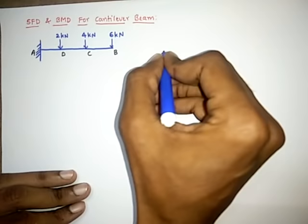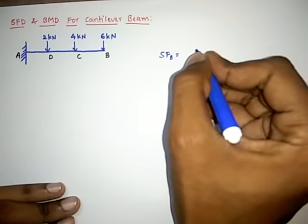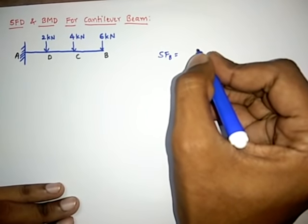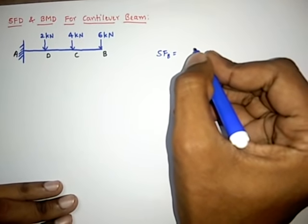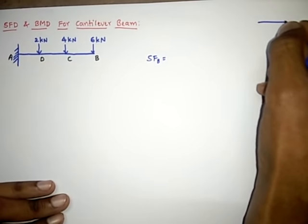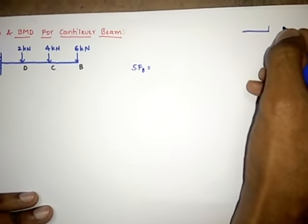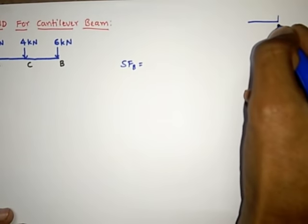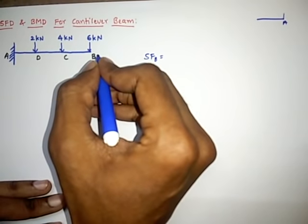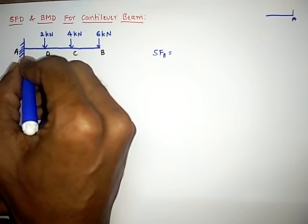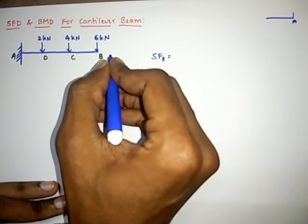Let us calculate shear force at B. First, to calculate shear force at any section, we define the shear force at any point as the sum of the forces to the right or left of the section. Here, I will start from the right side and move to the left, taking all the forces to the right of the point or section.